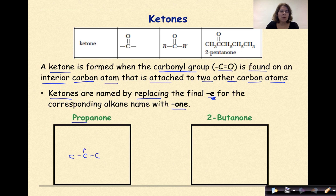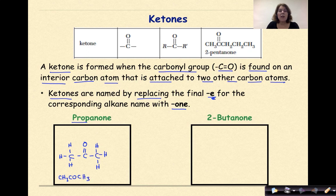Here's my interior carbon surrounded by two other carbons — that interior carbon now has four bonds. I'll put in the bonds and hydrogens for the remaining carbons. The condensed structural formula is CH₃COCH₃, and that's the condensed structural formula for propanone.